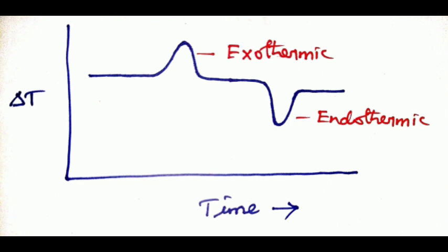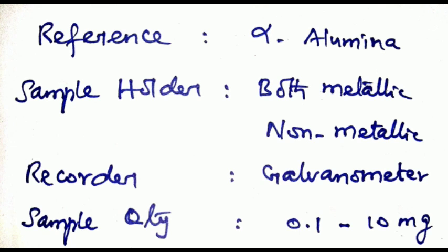The reference material is alpha-alumina because it is thermally stable up to 2000 degrees Celsius. Sample holders can be metallic such as nickel, platinum, or steel, with platinum being the best, or non-metallic like glass, sintered crucible, alumina, or silica.